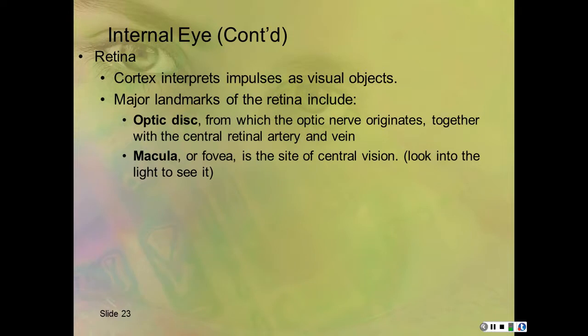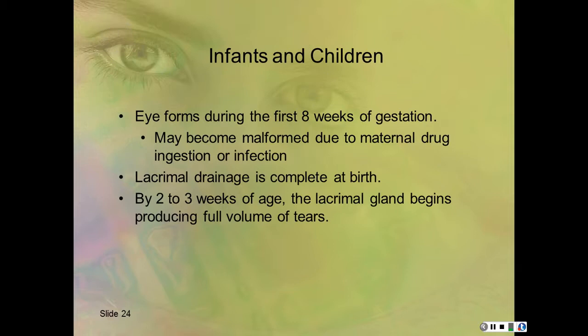To see the fovea centralis you have to look into the light. As soon as you do, the pupil tends to constrict a lot.